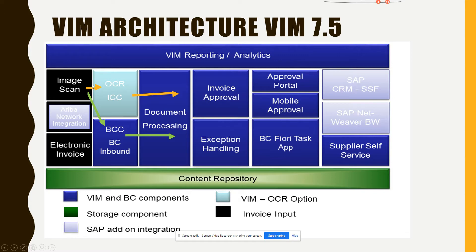In VIM 7.5, you have image scan, Ariba network integration, and electronic invoices. Image scan means you get some invoices and scan them through Enterprise Scan, or through a web tool. Image scan also includes cases where you get an email from a vendor and it goes through OCR, which tries to read what is in the invoice and match up the data and push it into SAP. Then you have BCC inbound, which can be a different type of OCR software.